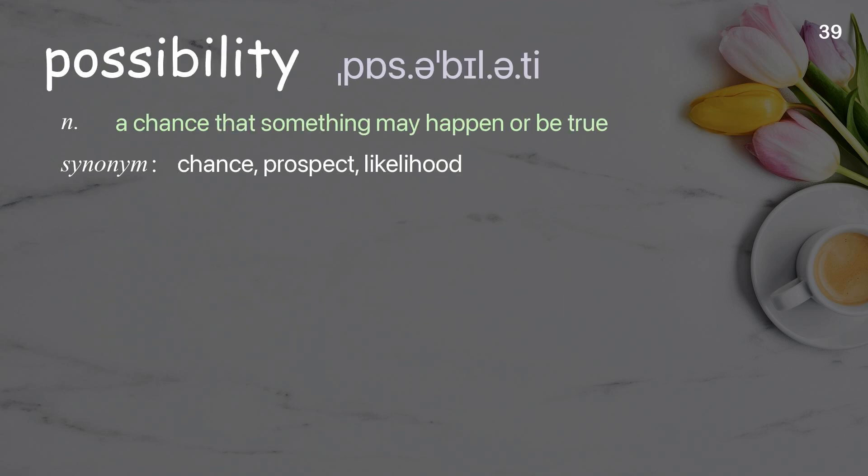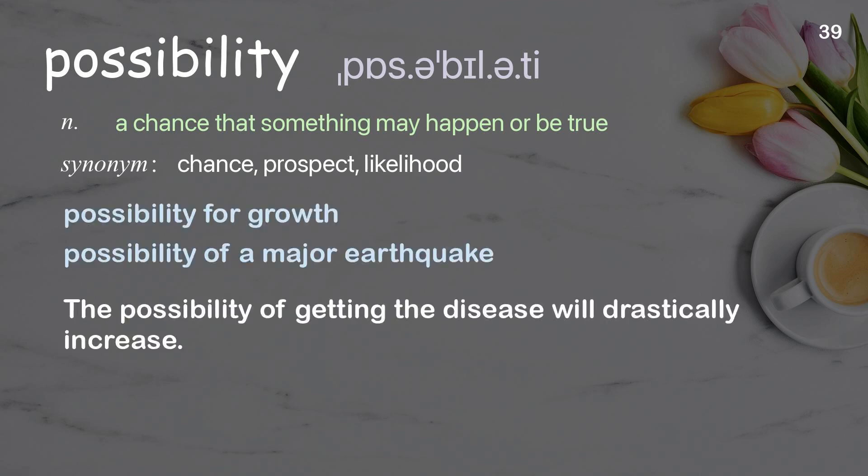Possibility: A chance that something may happen or be true. Examples: Possibility for growth, possibility of a major earthquake. The possibility of getting the disease will drastically increase.